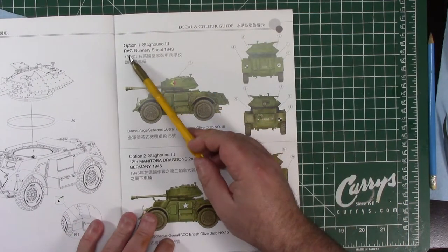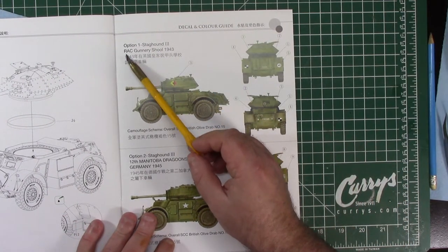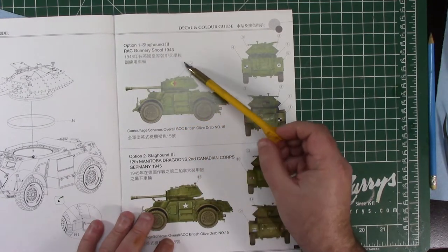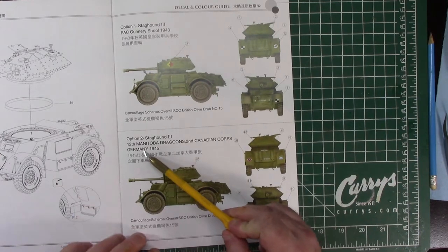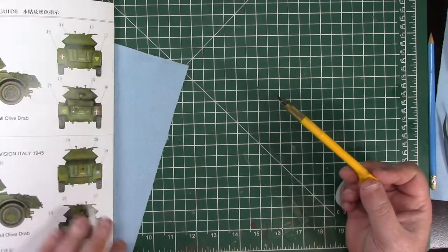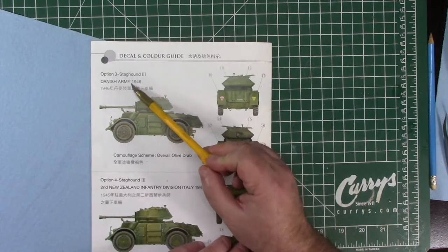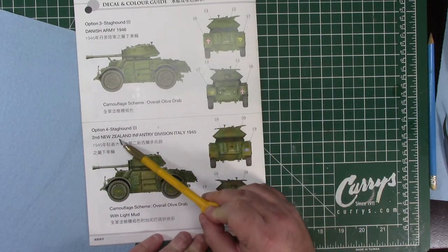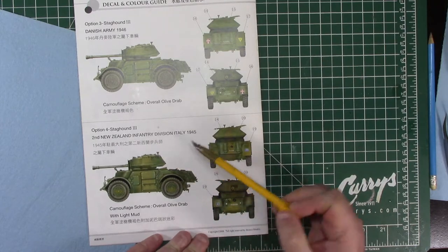Slapping the turret and the turret ring in. The options they give you are the Royal Armored Corps Gunnery School 43, 12th Manitoba Dragoons Germany 45, Danish Army 46, and 2nd New Zealand Infantry Division Italy 45.